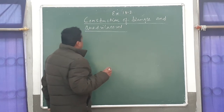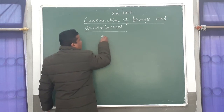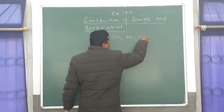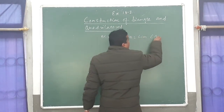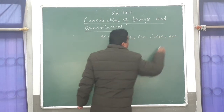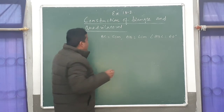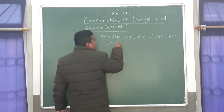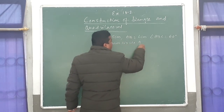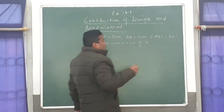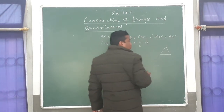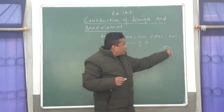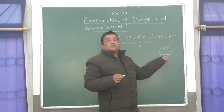Suppose the question is: construct triangle ABC in which BC equals 5 centimeter, AB equals 6 centimeter, and angle ABC equals 60 degree. Up to here you have done in junior classes. Now we have to know how to construct the circumcircle. Circumcircle means from outside the triangle, if a circle passes through all vertices outside the triangle, this is called the circumcircle of the triangle.